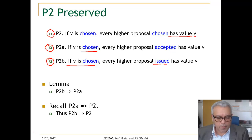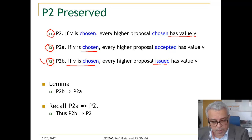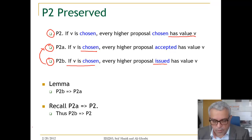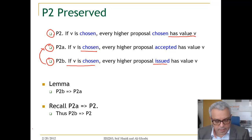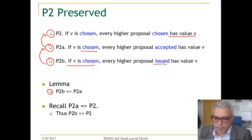We already showed that if we have P2B, this will imply P2A, because when you issue a value, these are the values to be accepted. And if these are the values to be accepted, then P2A also implies P2 — that every higher proposal chosen has the value V.